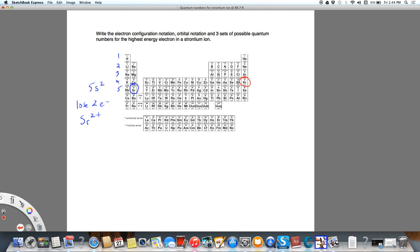So we're really going to draw the electron configuration notation, orbital notation, and three sets of possible quantum numbers for the highest energy electron in krypton. Let's draw this out.